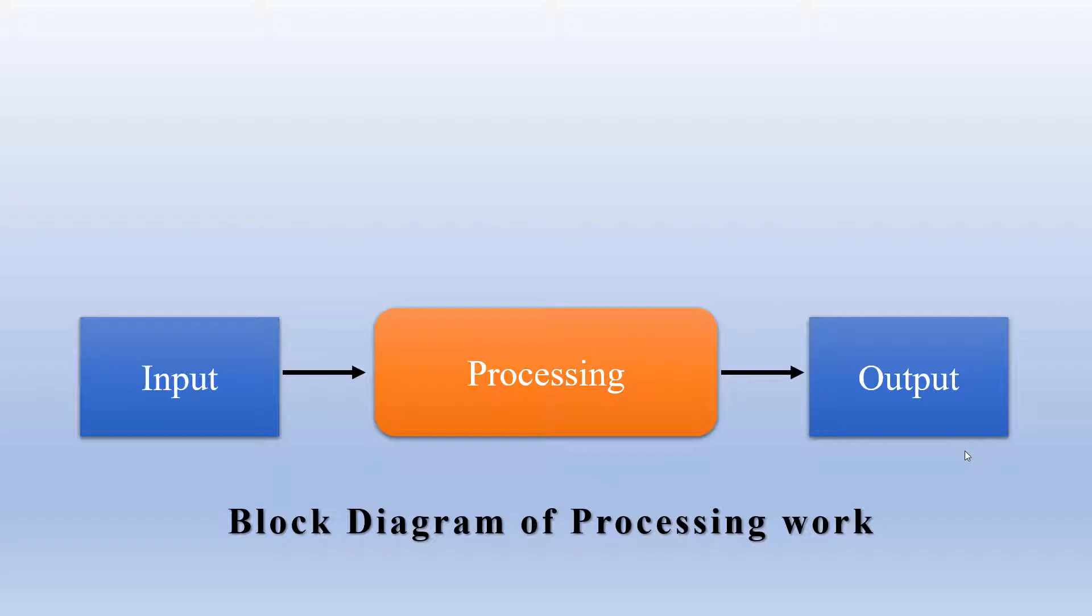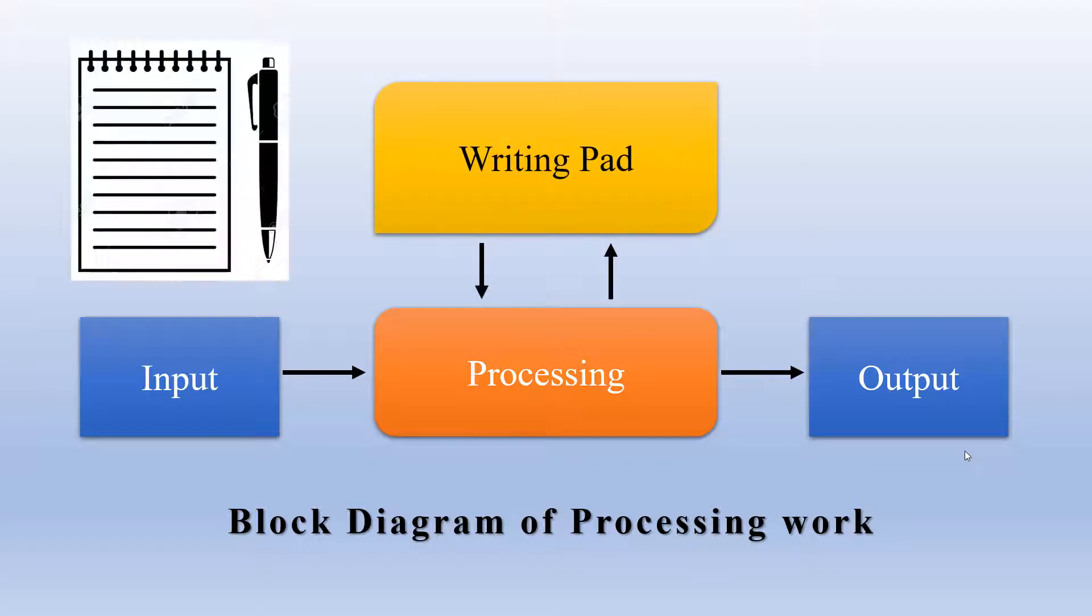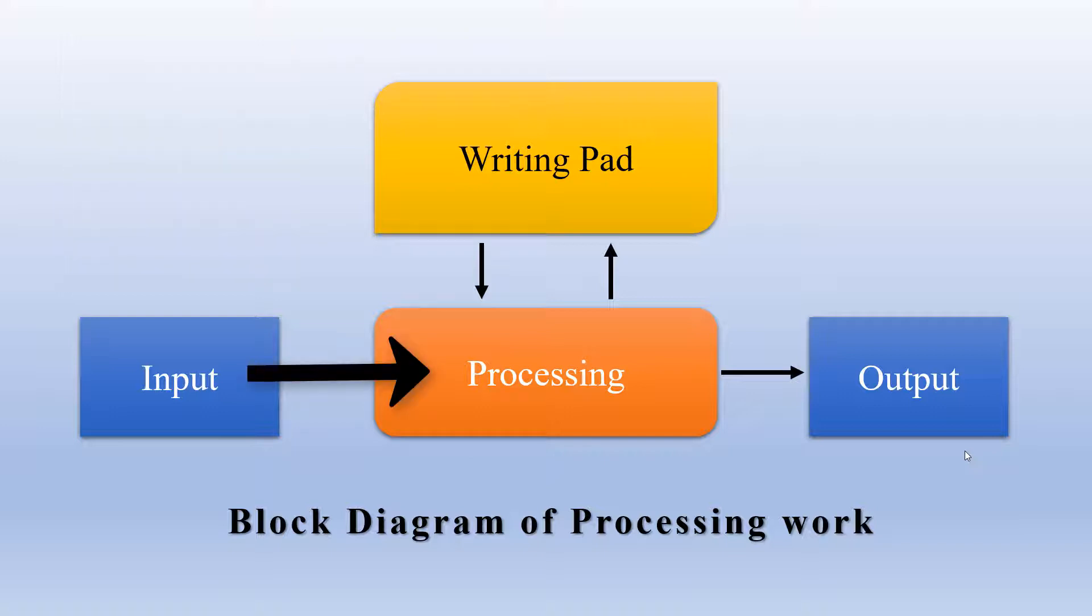This is a very popular diagram which tells you about how human beings carry out various processes. Human beings do some processing on some data available and generate the output, and this processing may also require sometimes a writing pad. So if you are calculating a grocery bill, then you will put down the rates of each item you have purchased and the quantity, and you process the whole bill.